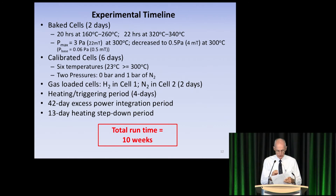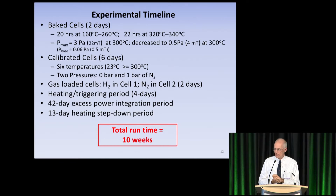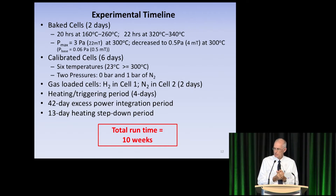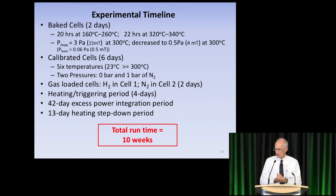The experimental timeline spanned 67 days. It included a cell bakeout at temperatures between 150 and 350°C under vacuum to remove water. Then there was a 6-day calibration period under two gas conditions — evacuated and one bar of nitrogen — up to 300°C. There was a 2-day gas loading period, a 4-day heating triggering period, then a 42-day period running at constant temperature and power to measure any excess power. Finally, there was a 13-day step-down period.